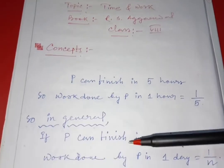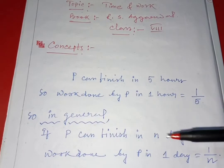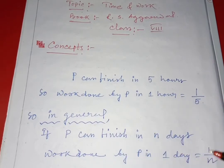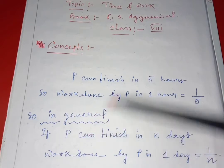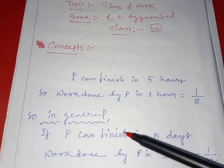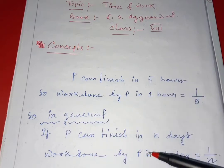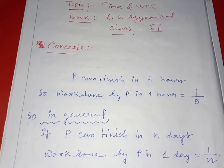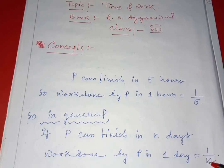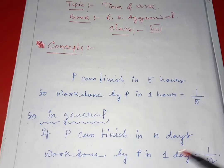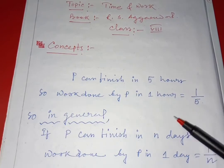In general, if P can finish it in n days, then work done by P in one day equals one by n. Whenever you find that P, Q, or any person can finish in n days, x days, two days, three days — or hours, months, or years — the work done by that person in one unit equals one by that number. If it is two, it should be one by two; if it is eight, it should be one by eight. This is the basic concept of time and work.